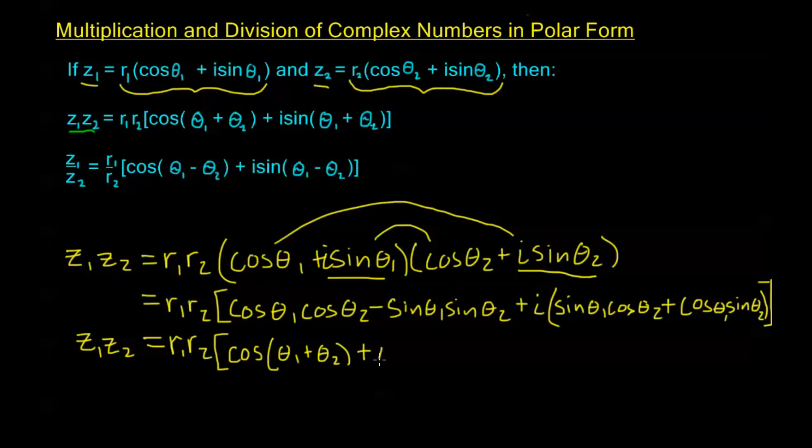And I have plus i, and looking at everything over here, sin θ₁ cos θ₂ plus cos θ₁ sin θ₂—we know this is my addition formula for sine. So this is just sin(θ₁ + θ₂). And there we have it. This is our multiplication formula for complex numbers in polar form.